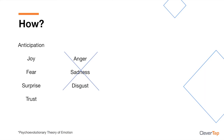Those five emotions are surprise, trust, anticipation, joy, and fear. Fear in the context of marketing becomes fear of missing out. Hence, we went with FOMO.